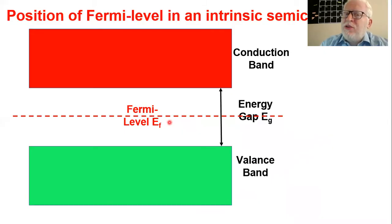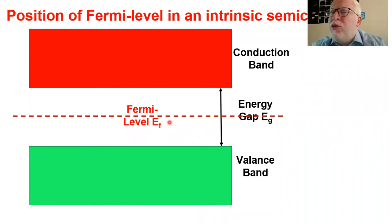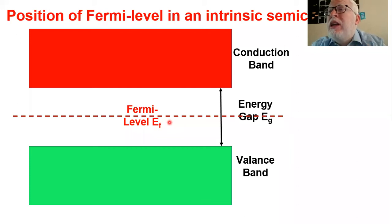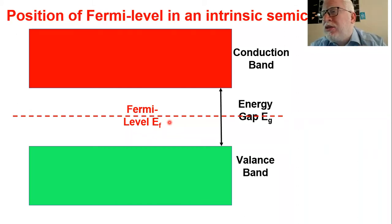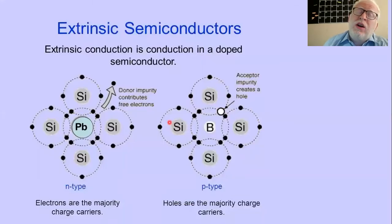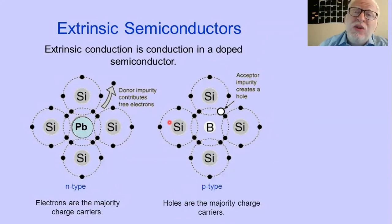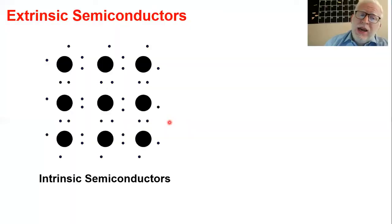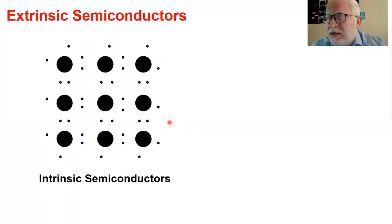Now what we are going to do is add a foreign material — what we call an impurity material. Let's see how we will do this and what its effect is. This is generally a semiconductor; let's say silicon. For each atom in silicon, it has four electrons in the outermost energy level, in the valence level, and these four electrons combine with another four electrons in the form of a covalent bond.